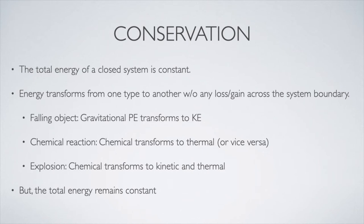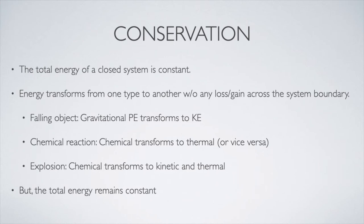Here are some examples of energy transformations. When an object falls, gravitational potential energy transforms to kinetic energy, and the opposite happens when an object rises. In chemical reactions, chemical energy transforms into thermal energy — that's an exothermic reaction — and an endothermic reaction is the opposite. In an explosion, the chemical energy of the explosive is released and transformed into kinetic energy of the products and surroundings as well as some thermal energy. But in all of these scenarios, the total energy of the system is constant before and after — the loss of gravitational potential energy of a falling object is exactly equal to the gain in kinetic energy.